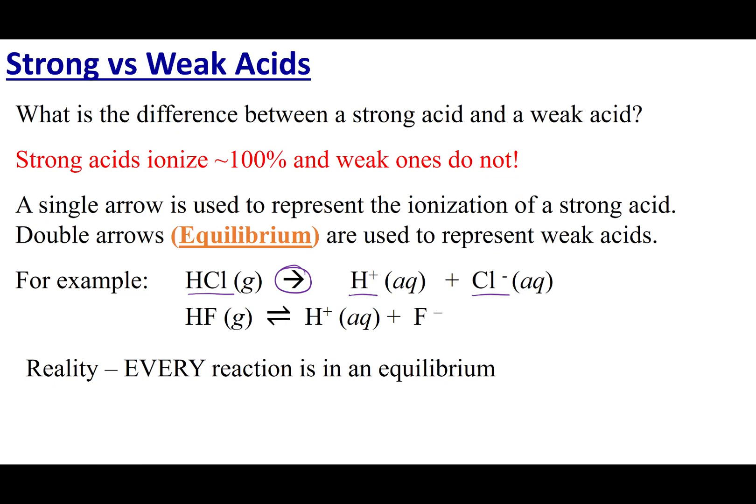So, if it doesn't break up completely, that means that I still have some of it intact. And so, I am going to go ahead and use the equilibrium arrow. So, in this example, HF is considered a weak acid. It does break up into H+ and F-, but most of it stays intact and still stays as HF when I dissolve it in solution.